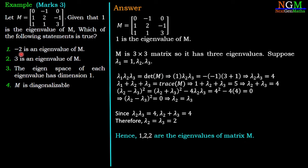Option 1 says -2 is an eigenvalue of M, which is wrong. Option 2 says 3 is an eigenvalue of M, which is also false. So options 1 and 2 are incorrect.